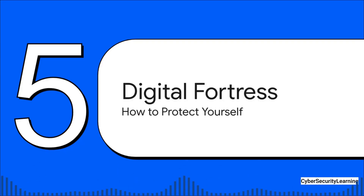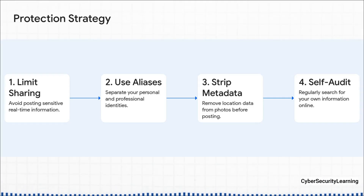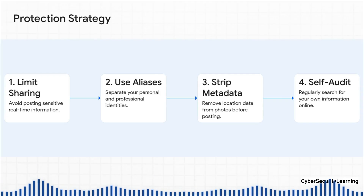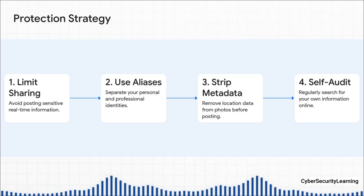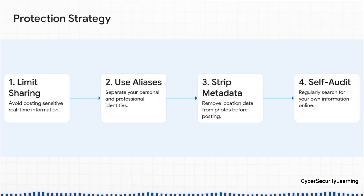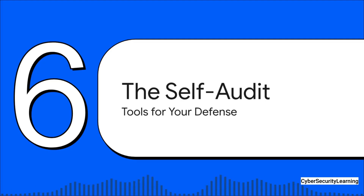Seeing all that play out is a little terrifying, and it should be a wake-up call. But now that you know how it works, you can start defending against it. Here's a simple four-step strategy. Number one: limit your public oversharing — think twice before you post that you're off to Hawaii for two weeks, basically putting up a sign that says "my house is empty." Number two: use different usernames and different emails for different things — don't use the same handle for your gaming forum and your LinkedIn profile. Three: strip the metadata from your photos before posting. And number four: do a self-audit every now and then — use these techniques on yourself to see what's out there.